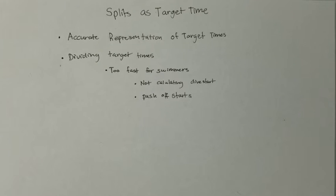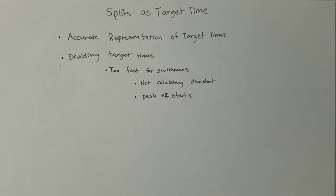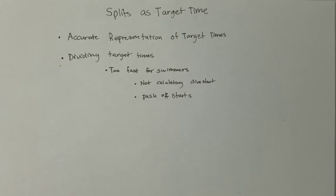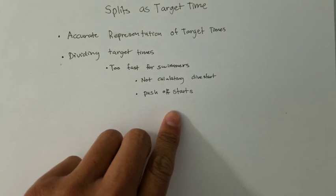That's why I stopped using divided times and switched to using splits as target times. The second 50 for the 100s and the average of the third and fourth 50 for the 200s are calculated based on push-off time. Most of the time at practice, swimmers are pushing off the wall on the inner laps rather than doing a dive start, so the splits better match practice conditions.